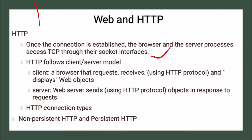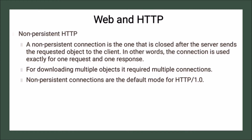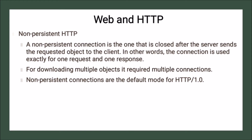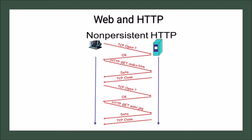There are two types of HTTP connections: non-persistent HTTP and persistent HTTP. In non-persistent HTTP, the connection is closed after the server sends the requested object to the client. In other words, the connection is used for exactly one request and one response. After fulfillment of one request, the server closes the connection. For downloading multiple objects, it requires multiple connections.